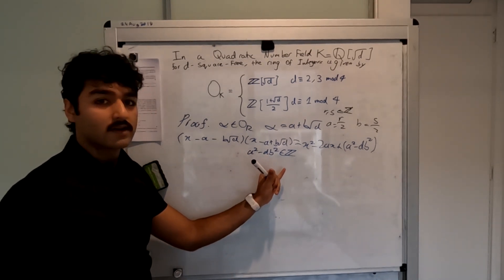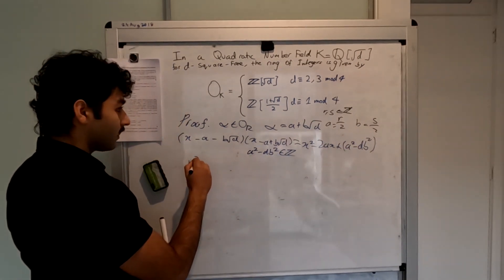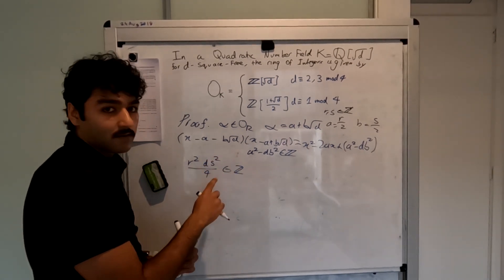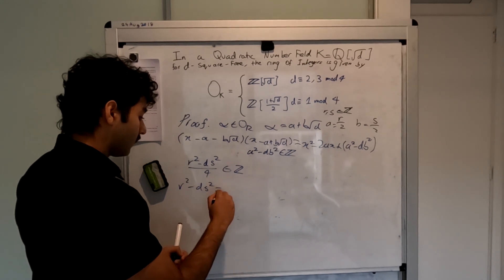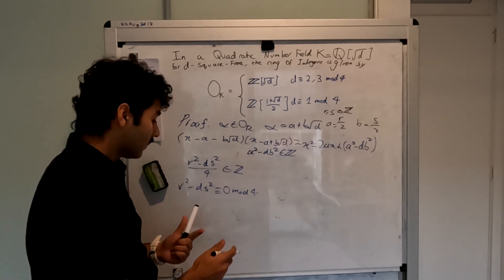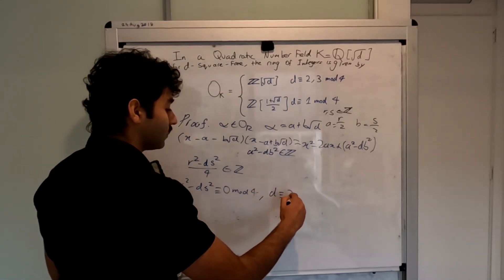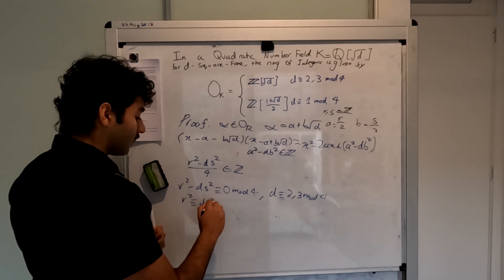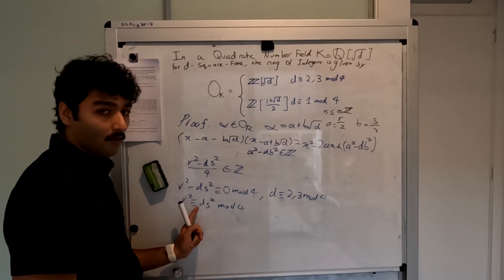Since we had that a squared minus db squared is in Z and a is r over 2 and b is s over 2, we rewrite this as r squared minus ds squared over 4 is in Z. It follows that the numerator must be congruent to 0 mod 4. Now we see that the only squares modulo 4 are 0 and 1, hence for r squared minus ds squared to be congruent to 0 mod 4: if d is congruent to 2 or 3 mod 4, as in the first case, we get that r squared is congruent to ds squared mod 4, so r squared is congruent to 2s squared or 3s squared mod 4.